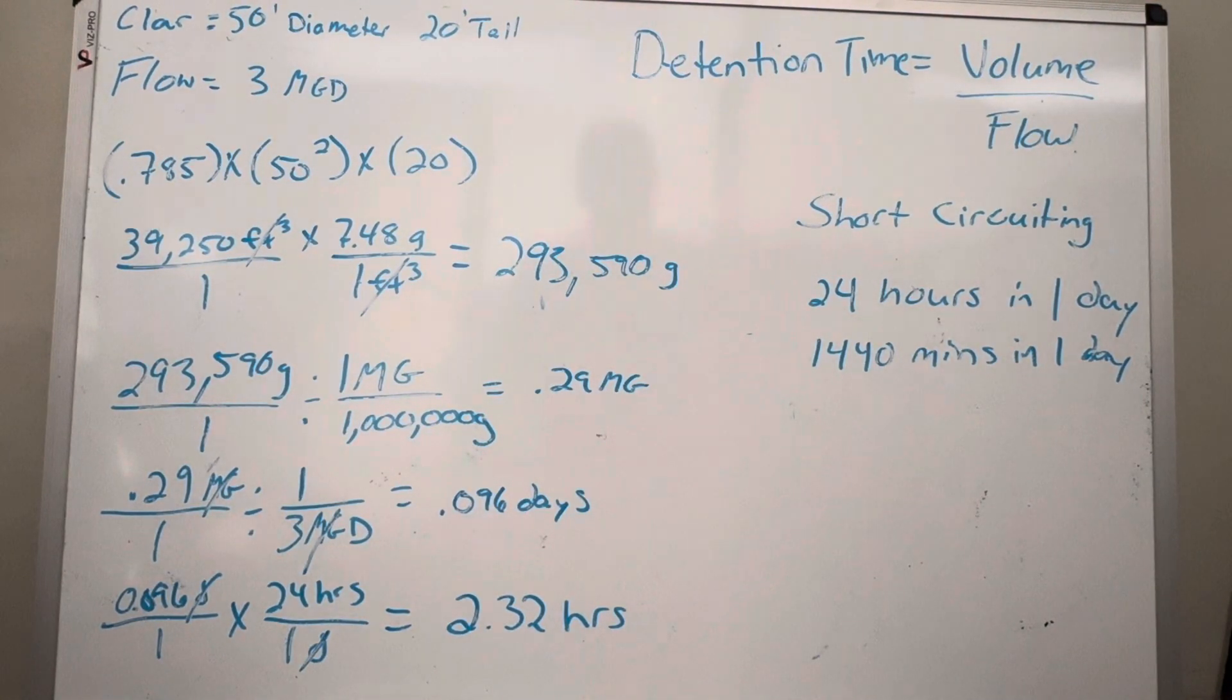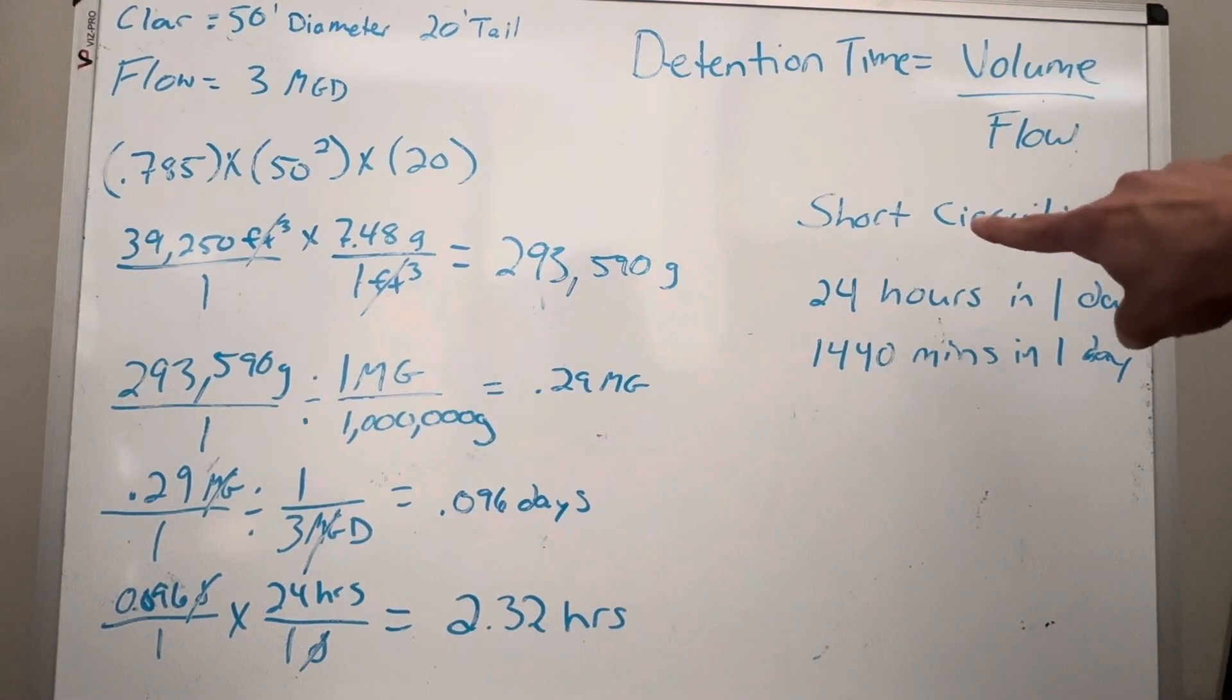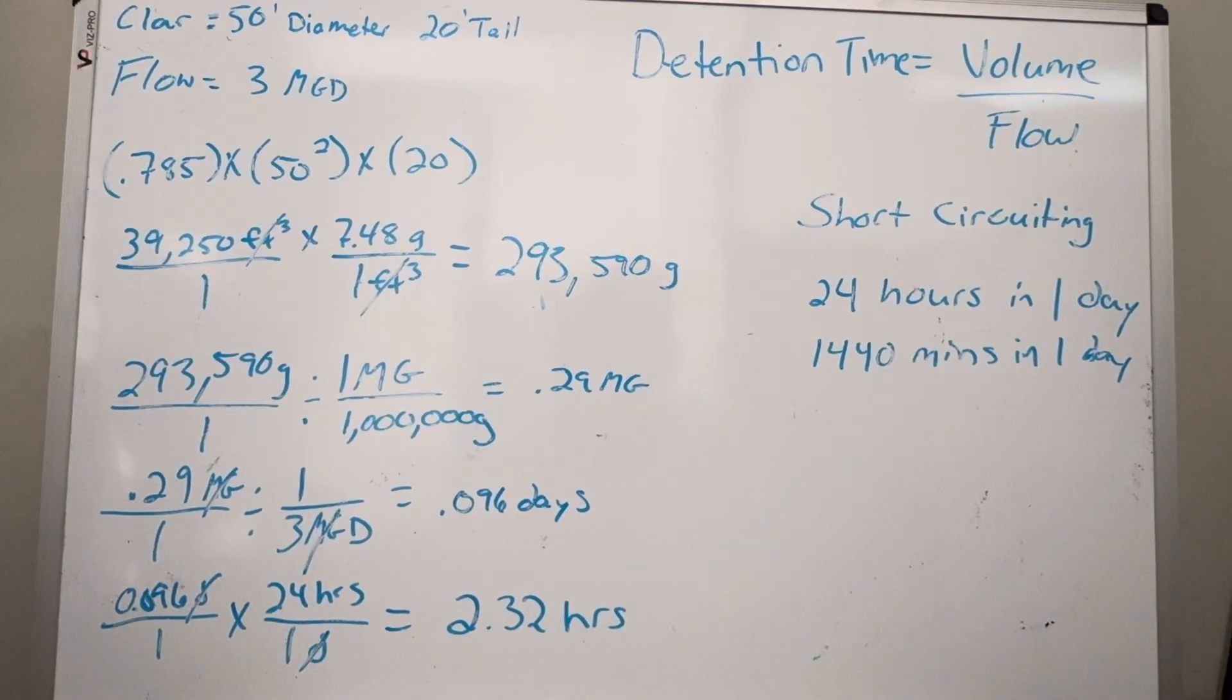A concept to know is short circuiting. This is pretty much taking a shortcut through the container. When we calculate detention time, it's theoretical detention time. There's always some degree of short circuiting unless you've got really good mixing, but you don't want to mix too much in a clarifier because then things don't settle. You'll typically see mixers in drinking water tanks or you'll have baffles. That's another thing to know about. But from the math purpose, you should know about short circuiting.